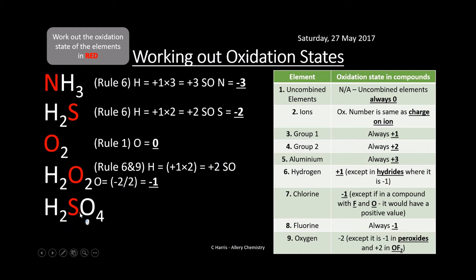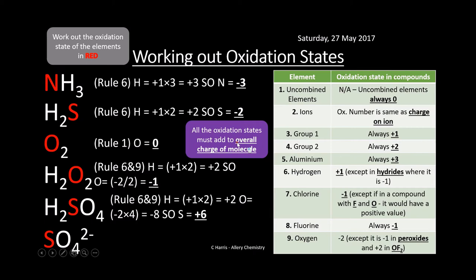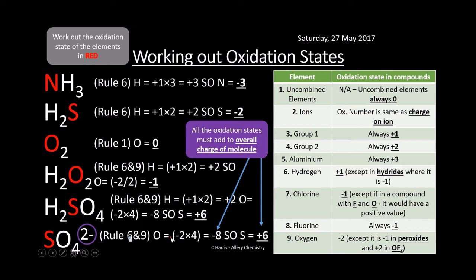In H₂SO₄: oxygen is −2 with four of them (−8 total), hydrogen is +1 with two of them (+2 total), so sulfur must be +6. For SO₄²⁻: the overall charge is −2, so all oxidation states must add up to −2. Oxygen is −2 × 4 = −8, so sulfur must be +6. This gives −8 + 6 = −2, which matches the overall charge.